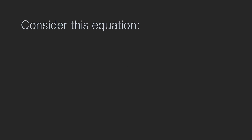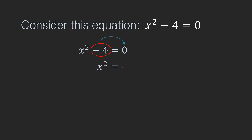Now forget the name for some time and consider this equation: x squared minus 4 is equal to 0. Do we actually need to factorize this or use the quadratic formula to get its solutions? No. We can simply transpose the constant term, that is minus 4, to the other side to get plus 4, and then solve it further to get the values of x as positive or negative 2. We were able to do so because after transposing the constant term to the right hand side, we got a perfect square on the left hand side, that is x squared.